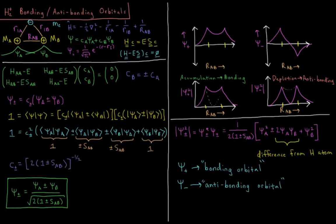This video will discuss bonding and antibonding orbitals in the hydrogen molecule ion. As in the previous video, we have our H2 plus model with two nuclei, each a proton, and a single electron. We have the Born-Oppenheimer approximation applied, so our nuclei are fixed at their given location, and the value of RAB is constant within a given solution to the electronic Schrödinger equation.